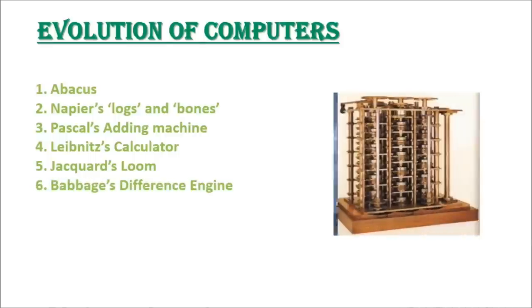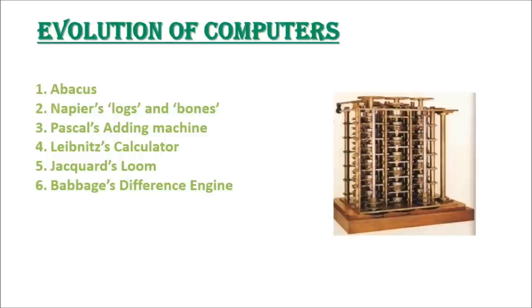Sixth, Babbage's Difference Engine: Charles Babbage, a professor of mathematics, developed a machine called Difference Engine in year 1822. This machine could calculate logarithmic tables to a high degree of precision.